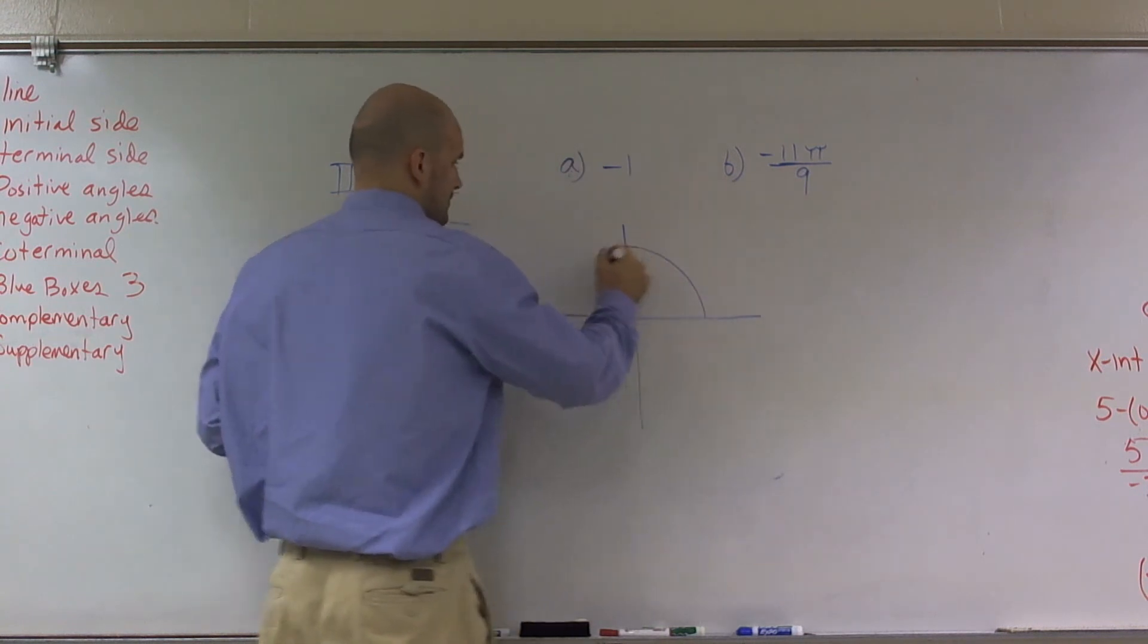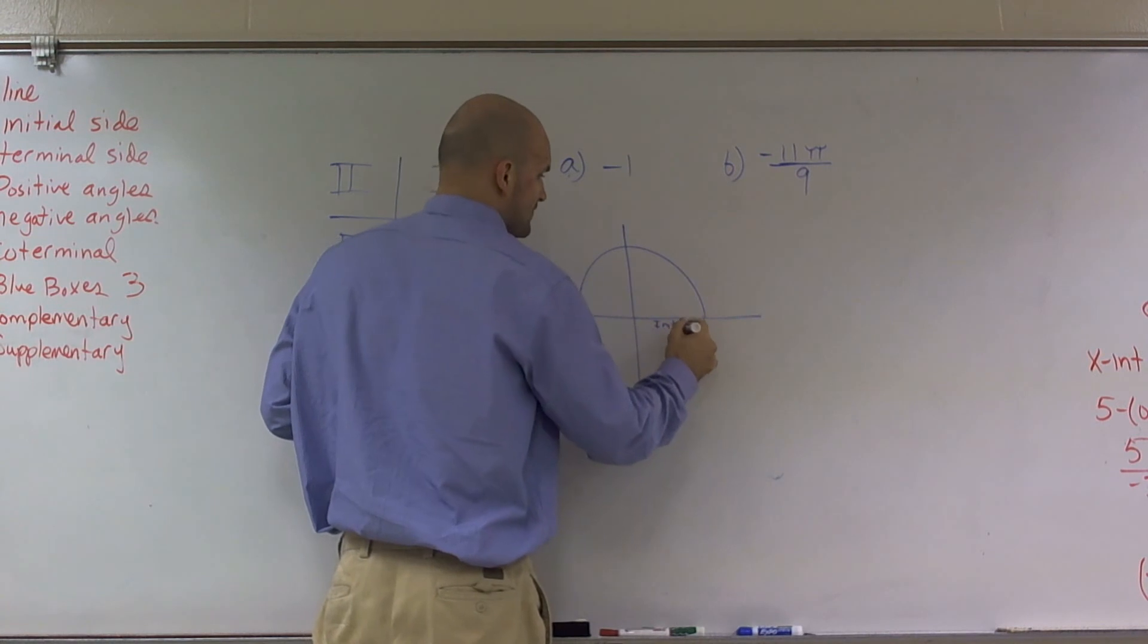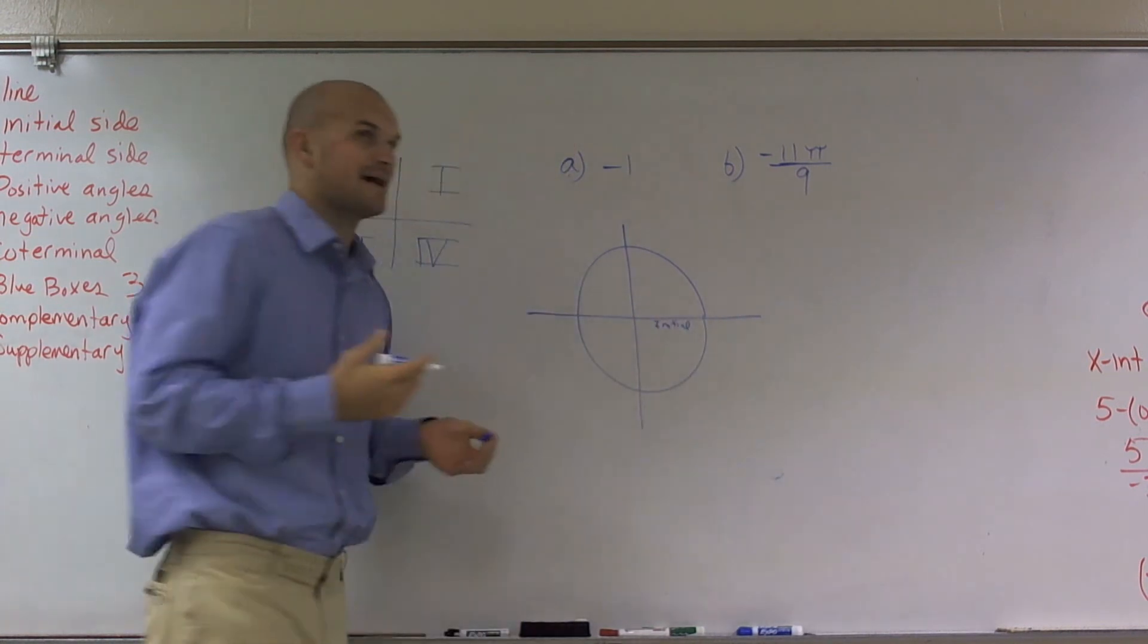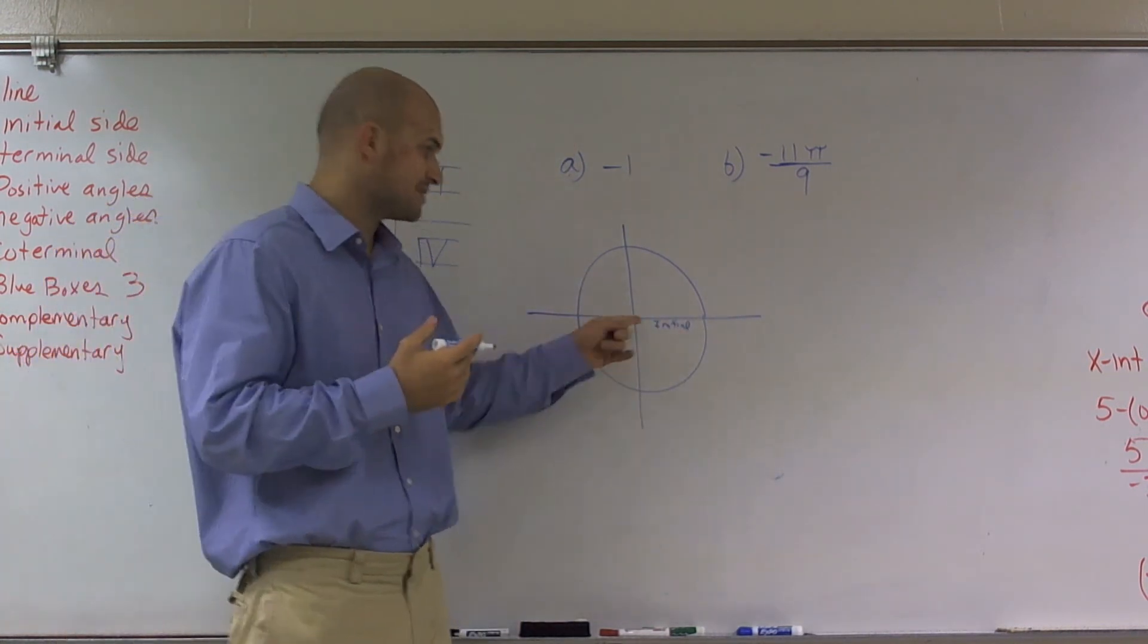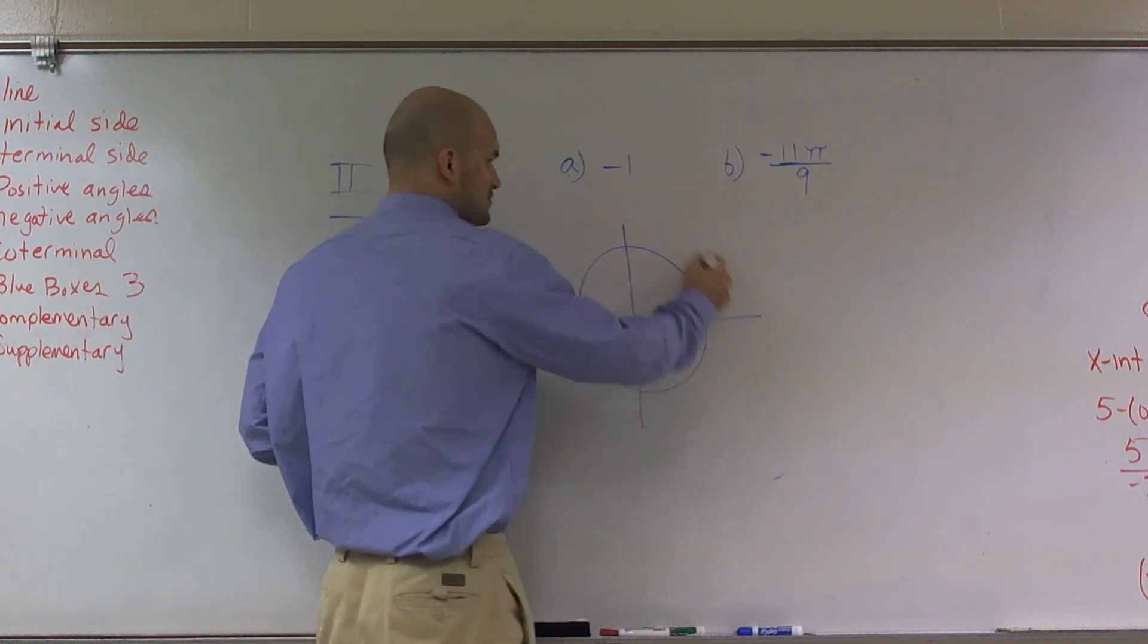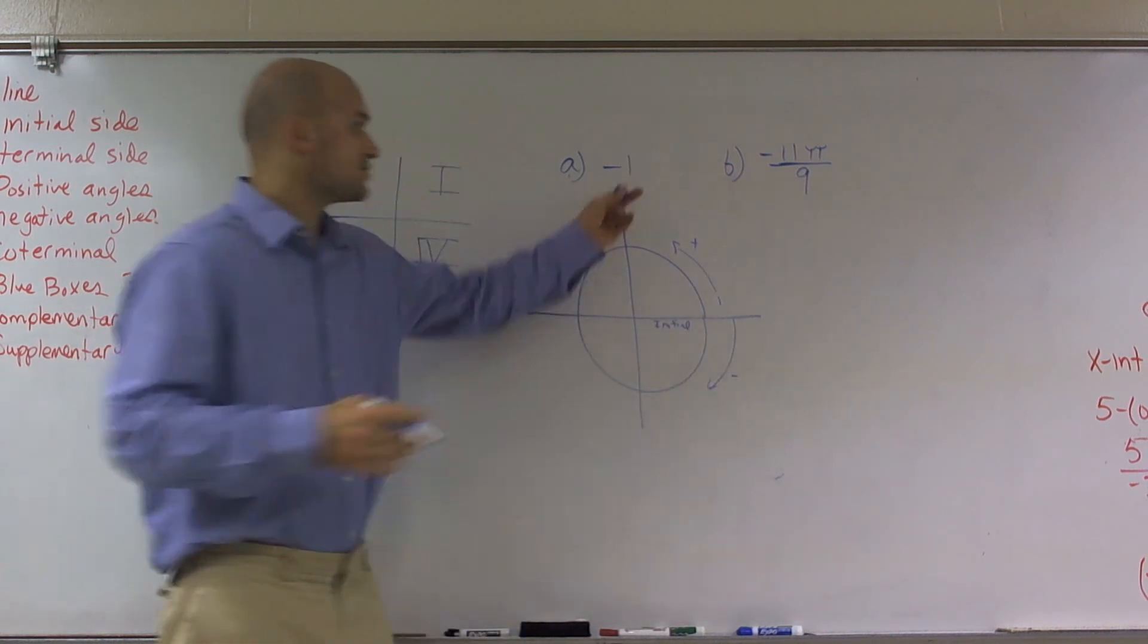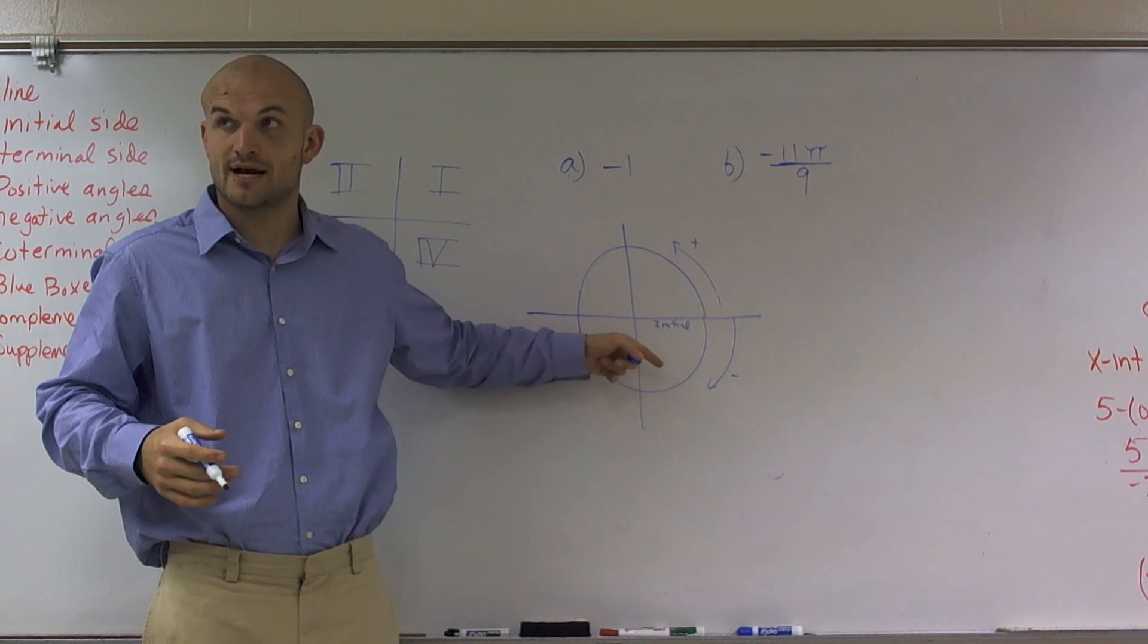Let's say we have a circle. And remember, this is what we call our initial side. And I haven't created my angle to do our terminal side. But remember, this is where we always start. And remember, if I was going to go this direction, it's positive. This direction, it's negative. So it says negative, so that's going to tell me I'm going to go in this direction, correct?